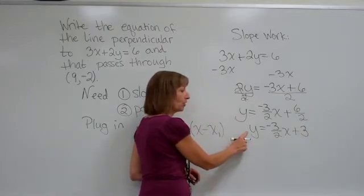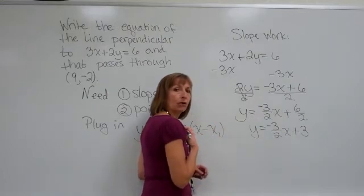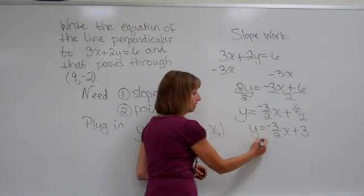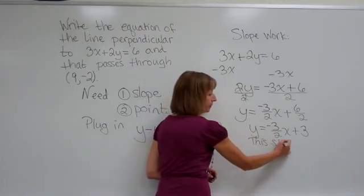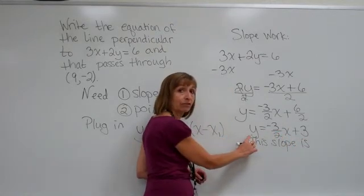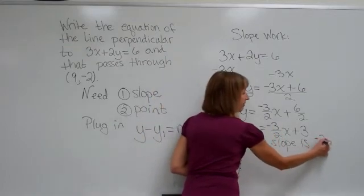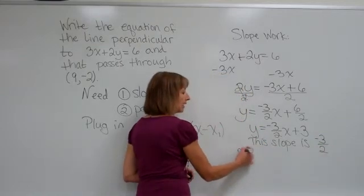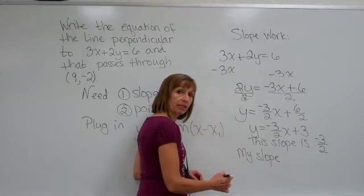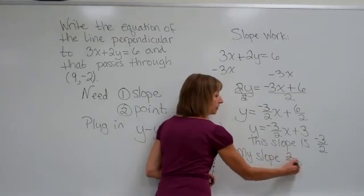I want to know what the slope of this line is, so I can get my slope that's perpendicular to it. This slope is the coefficient in front of the x after you've gotten the y on a side by itself. So my slope for this line is negative 3 halves. My slope, because my line is supposed to be perpendicular to this one, is change the sign and flip it over. So it'll be a positive 2 thirds.